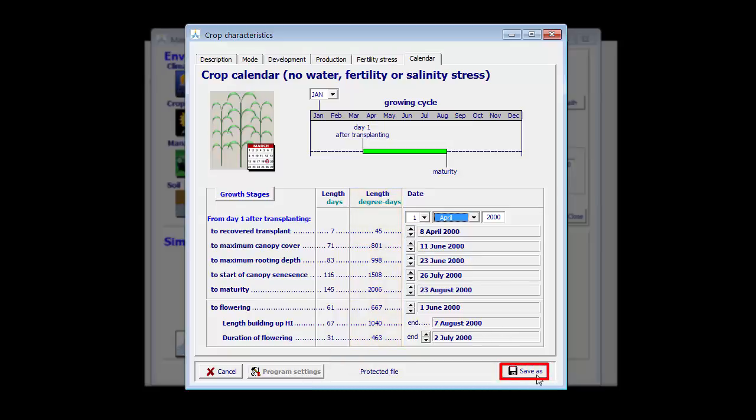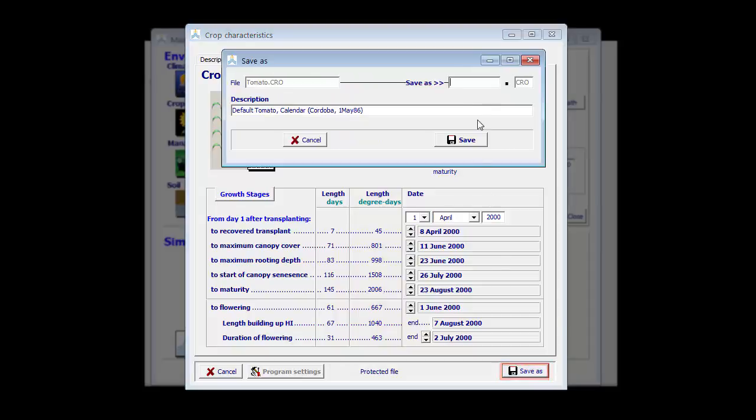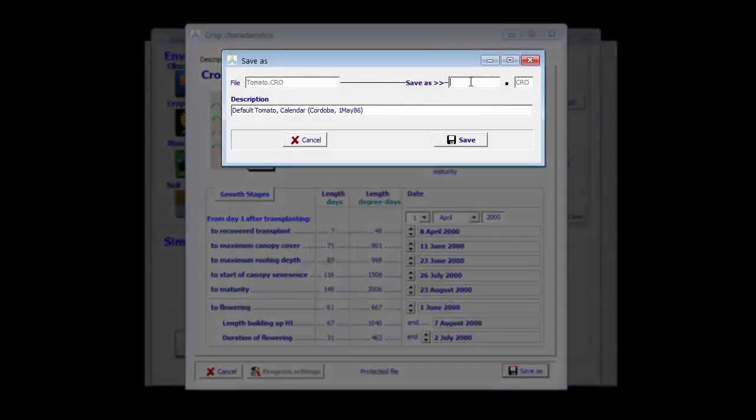I click here on Save As. In this menu I specify the file name, for example Tom Cal for calibrated GDD, to know that it is in growing degree days. And then it is no longer the default tomato, it is tomato calibrated for Foggia in GDD. I save this and now I'm back in the main menu where I have a calibrated crop.